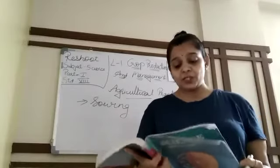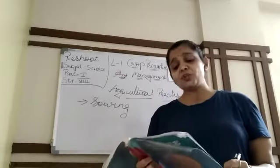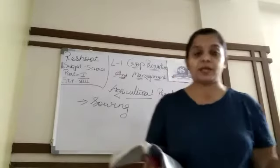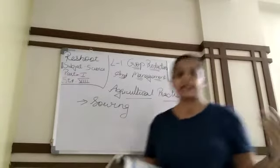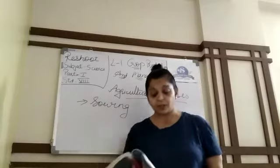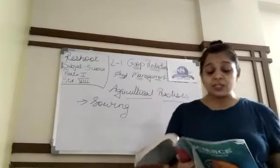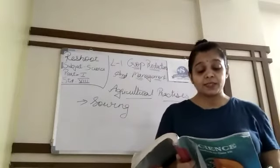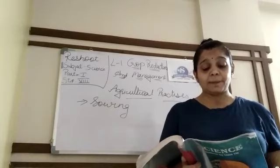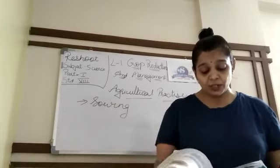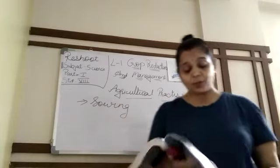Traditional tools were used more in olden times. The tools used traditionally for sowing seeds are shaped like a funnel. You can see in figure 1.2a — here is the funnel.